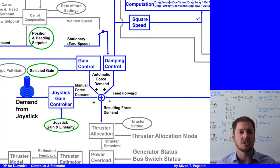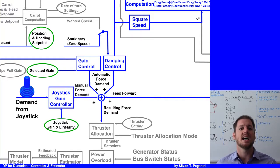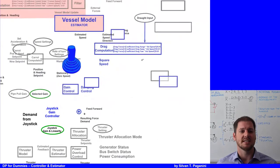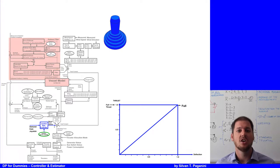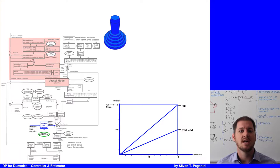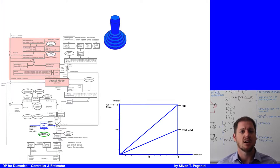When any axis is not under automatic control, the joystick can be used to manually control the force applied by the thrusters in those axes. There are two different joystick thrust settings. The first and most used is full thrust, meaning the maximum force available from all thrusters can be used — pushing the joystick full ahead uses all available thrust in surge. The second option is reduced thrust, where the maximum applied thruster force for axes under joystick control is limited to half of the available force.